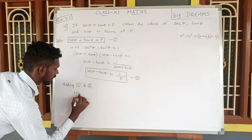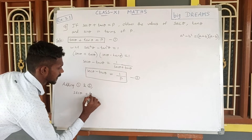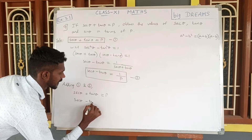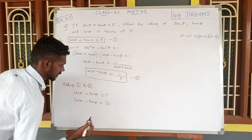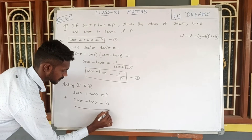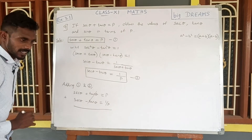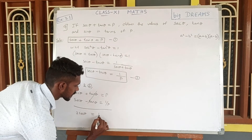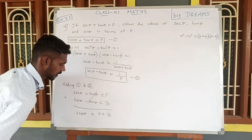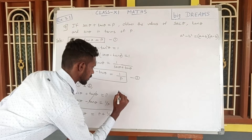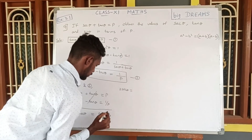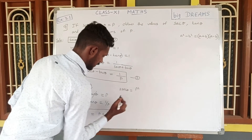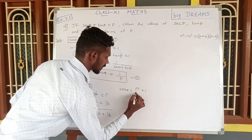Adding: secant theta plus tan theta equals P, and secant theta minus tan theta equals 1 by P. Adding these two, plus tan theta and minus tan theta cancel. We get 2 secant theta is equal to P plus 1 by P. Simplifying by cross multiplying: 2 secant theta equals P squared plus 1 divided by P.